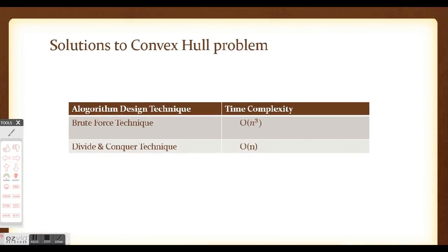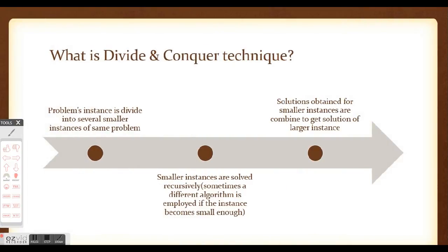These are the various algorithm design techniques employed to solve the convex hull problem. The time complexity for the brute force technique is O(n³), whereas for the divide and conquer technique the best case is O(n), which is linear time. We can conclude that the divide and conquer technique is a much more efficient algorithm than the brute force technique.